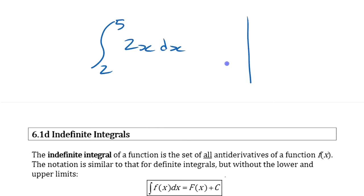That meant if you had the graph of 2x like that and the area from 2 to 5 underneath there, what that represents, right? That represents that.